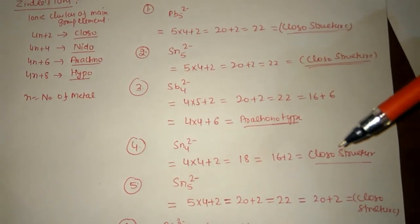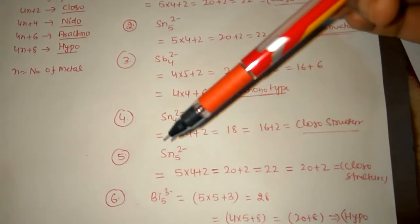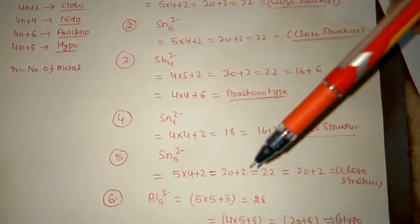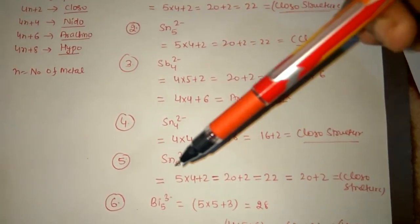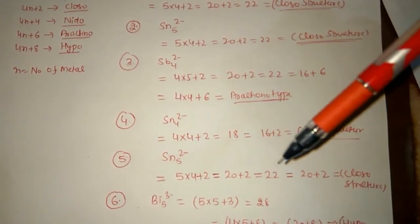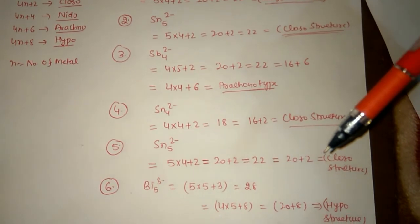And Sn5^2-: 5×4+2, which is equal to 20+2=22. And again we have to write 4n plus something, so it is 4n+2=20+2, which is clozo structure.